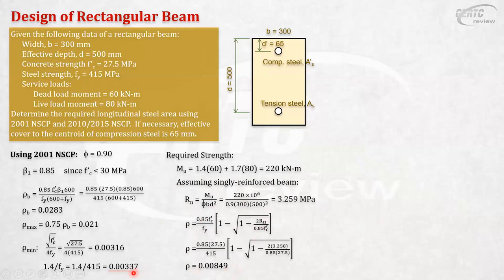Okay. If you notice, it's bigger than rho min. So, no problem. And, it's smaller than rho max. Meaning, the steel will yield and it's okay to design the beam singly reinforced. The required rho as singly reinforced did not exceed the rho max. So, we can design this beam as singly reinforced. All right. So, that means, this rho is okay.